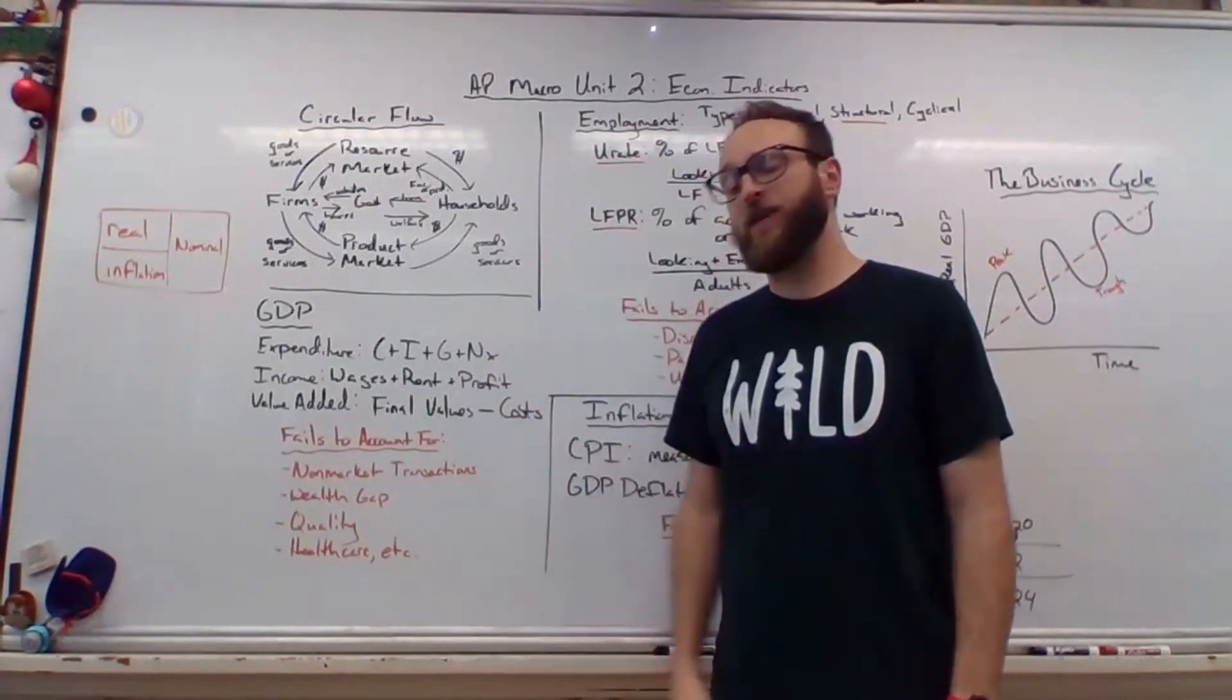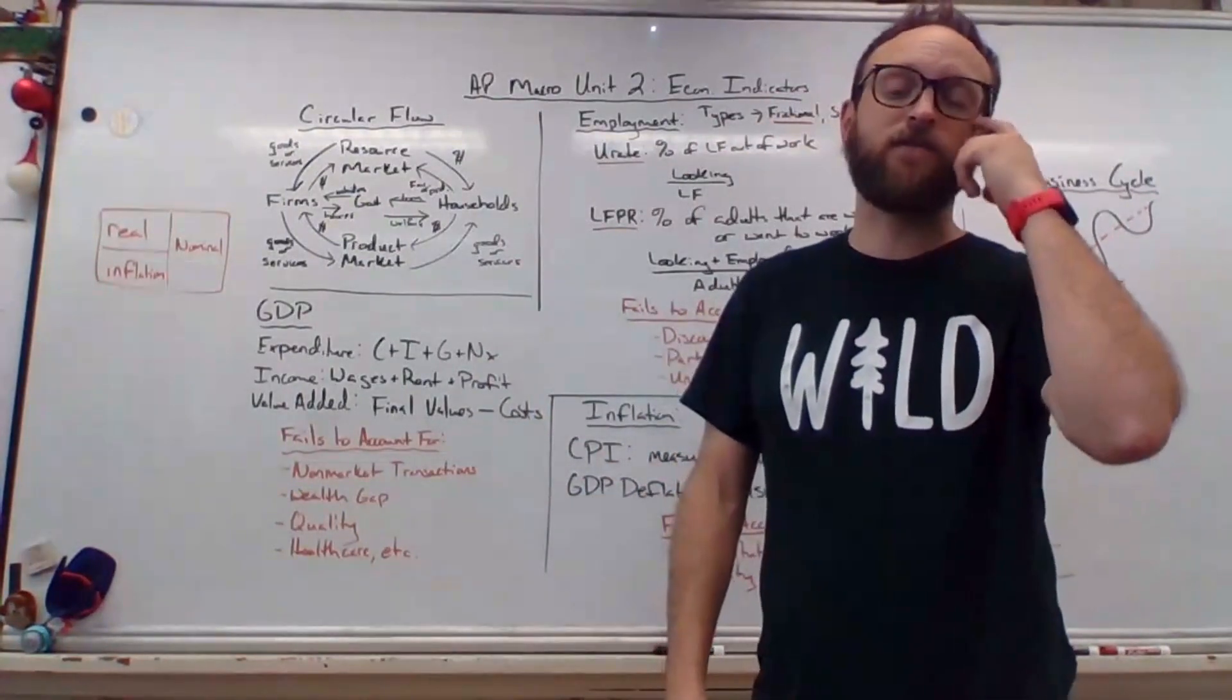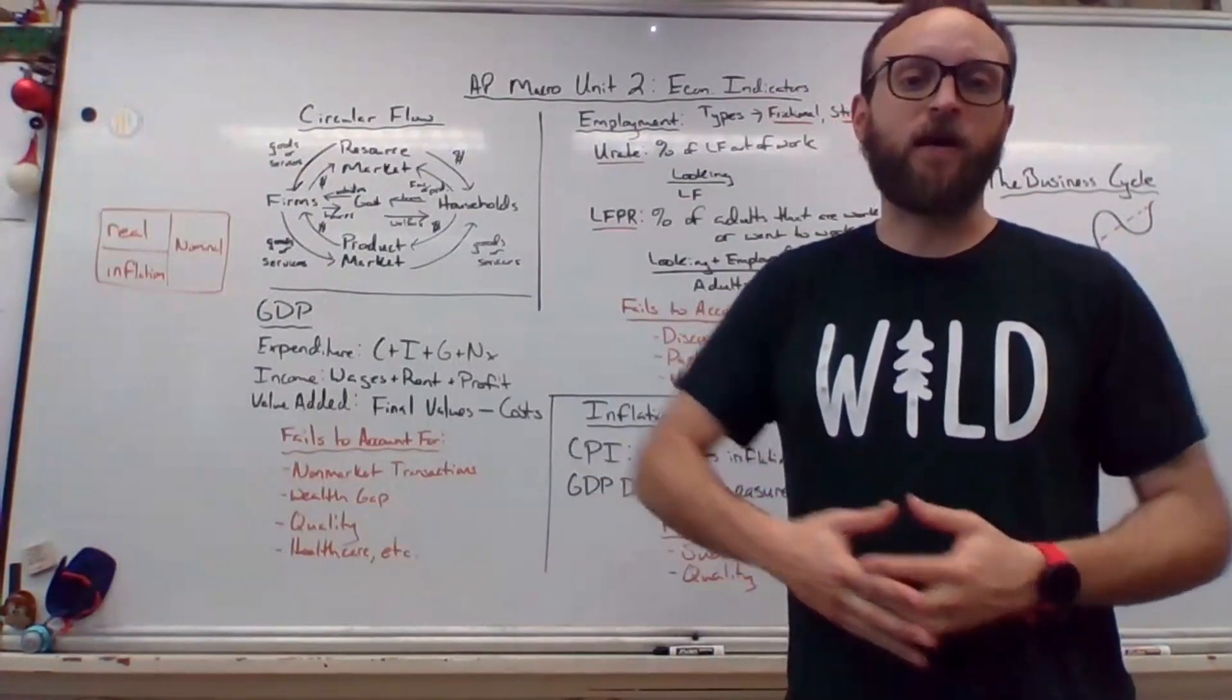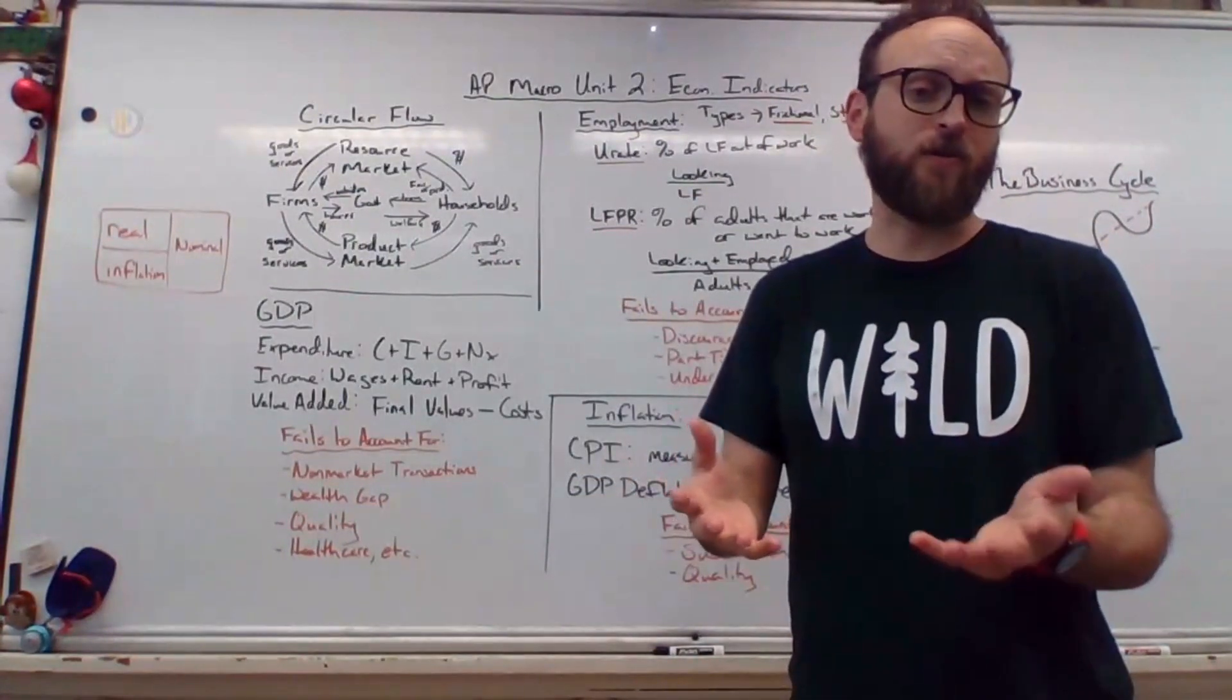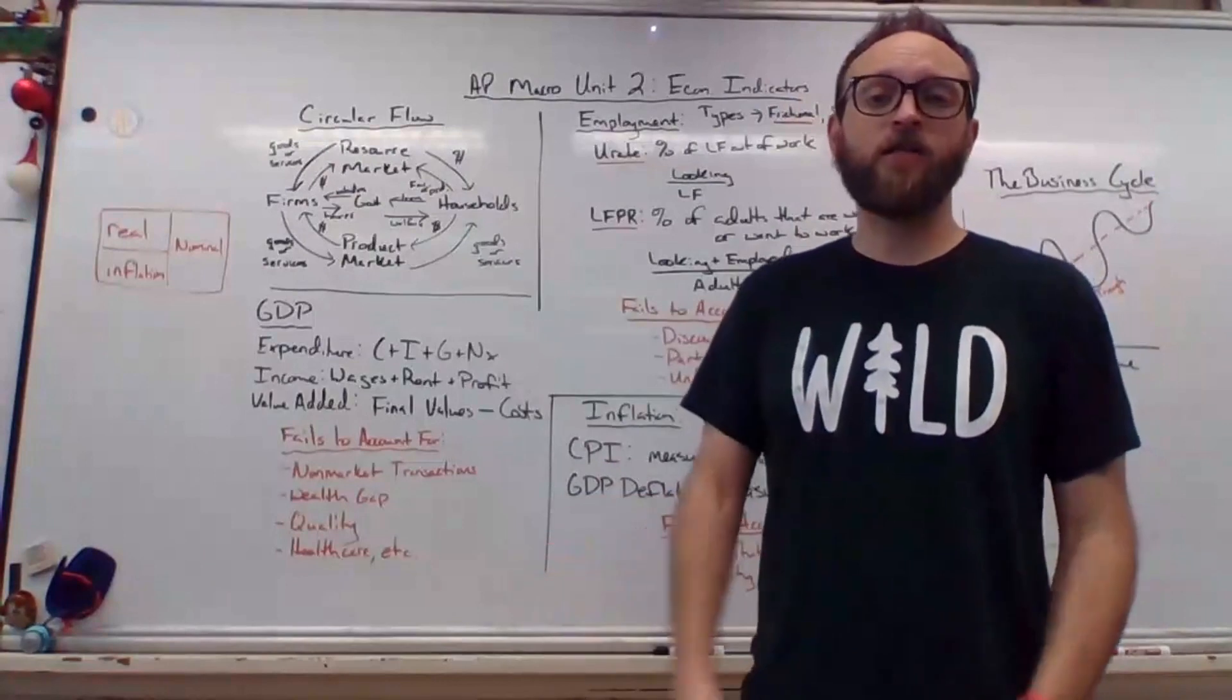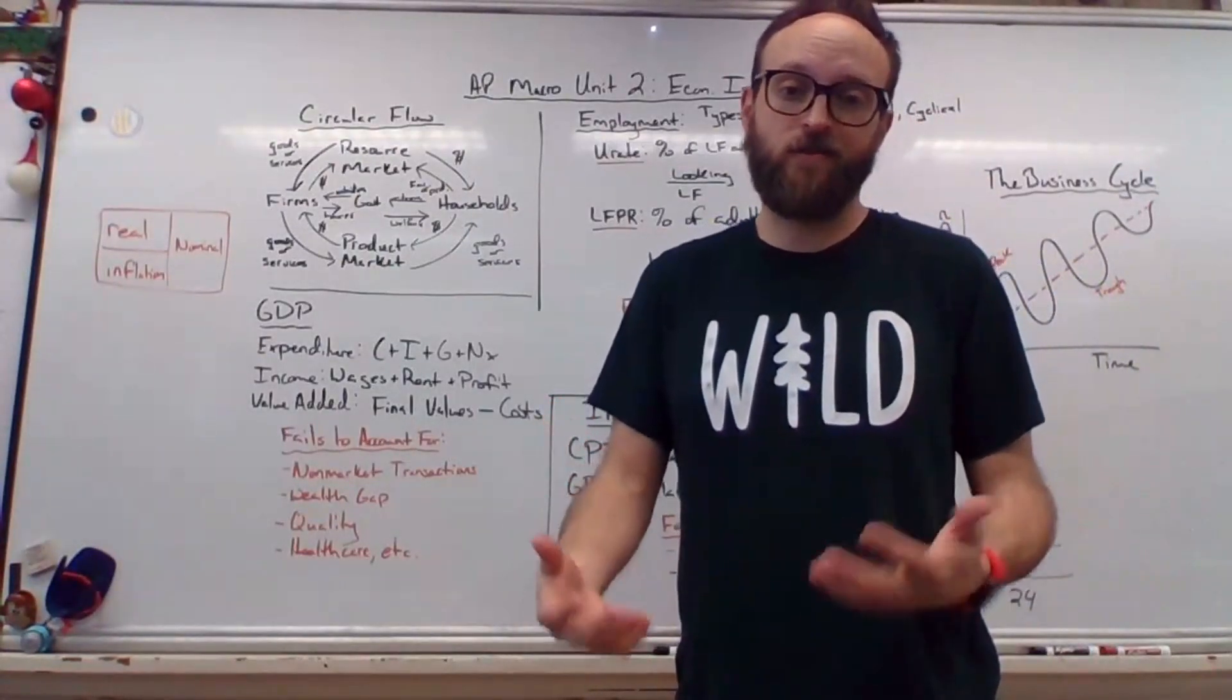These calculations fail to account for a few things. This is why GDP is fundamentally flawed as a metric of development. They don't really tell us about non-market transactions, black market transactions. They don't tell us about the wealth gap. We could have the richest person in the world, hashtag Jeff Bezos, but also no middle class. They also don't tell us about the quality of individual products or the healthcare system. Poverty is kind of a complicated thing.